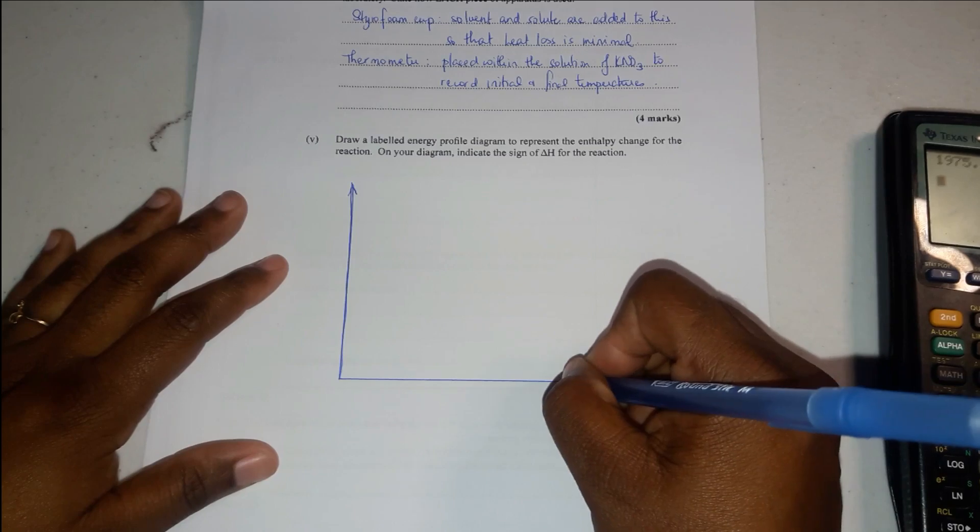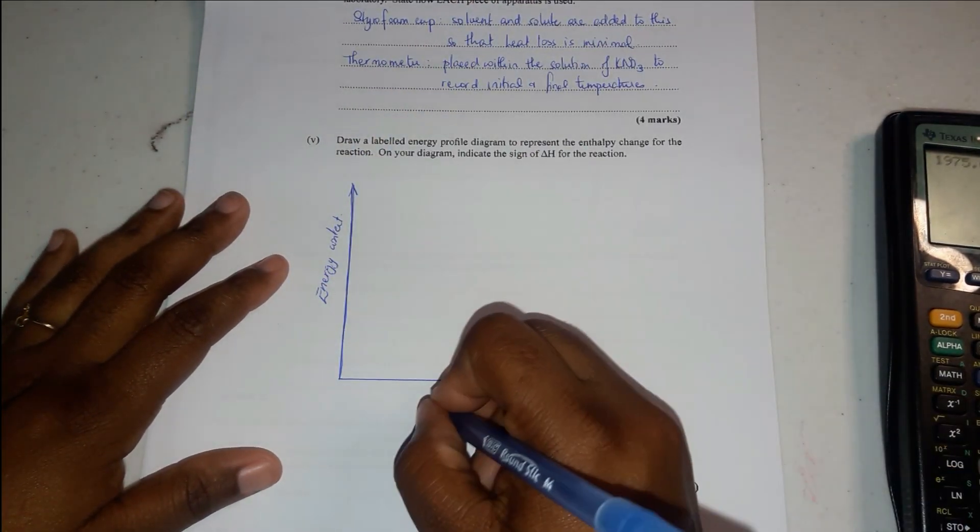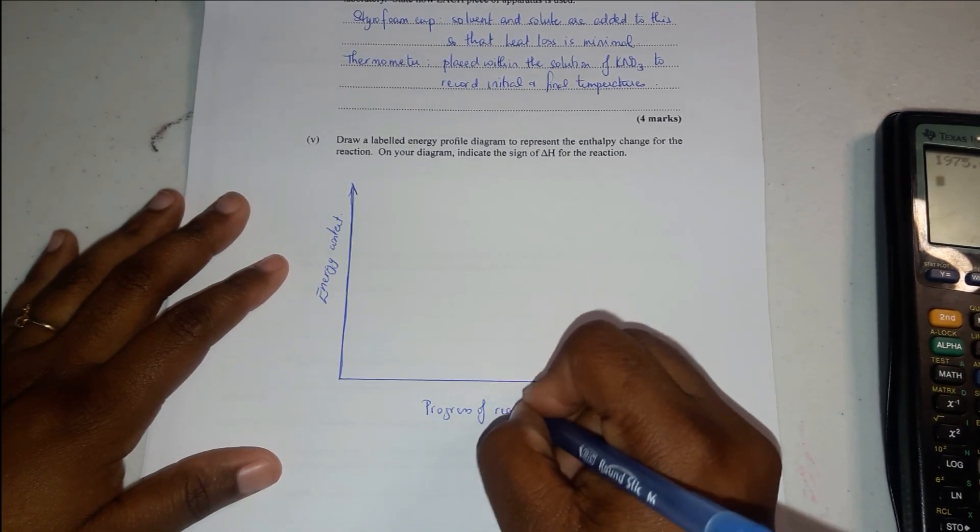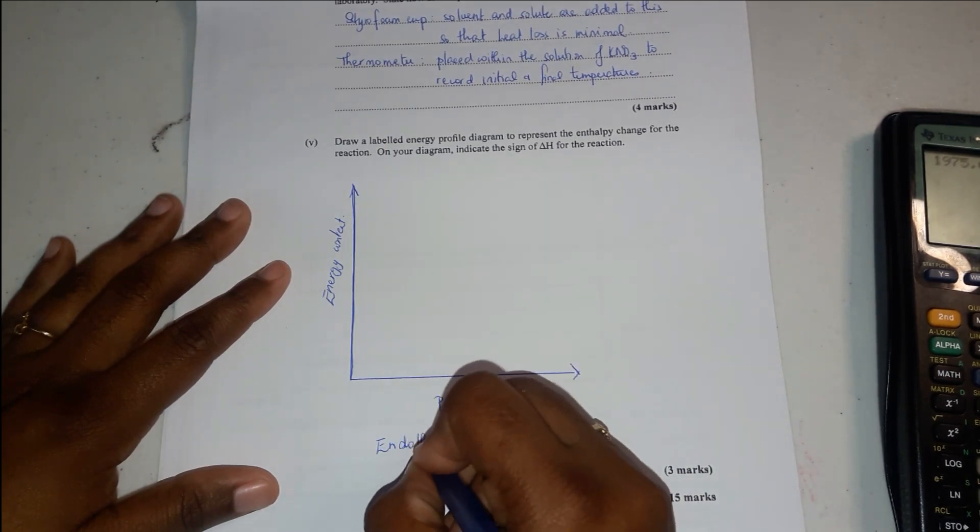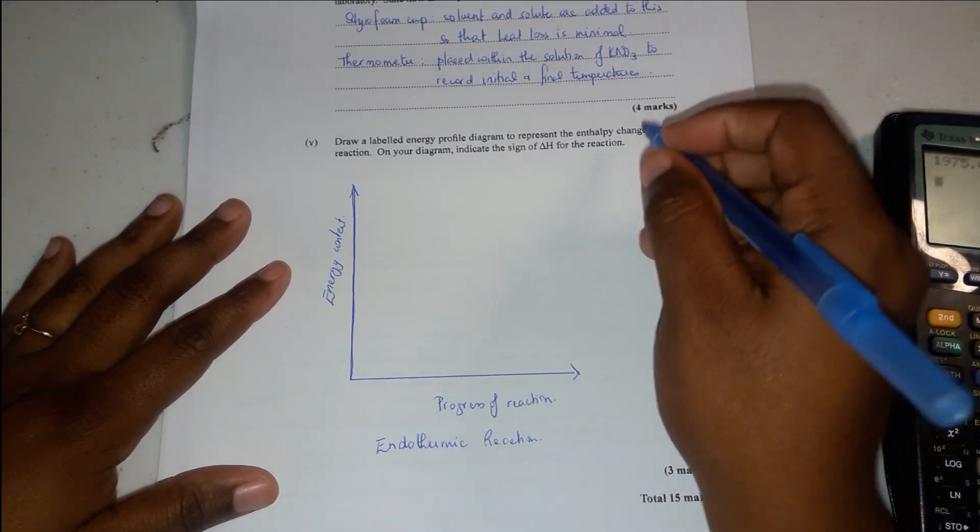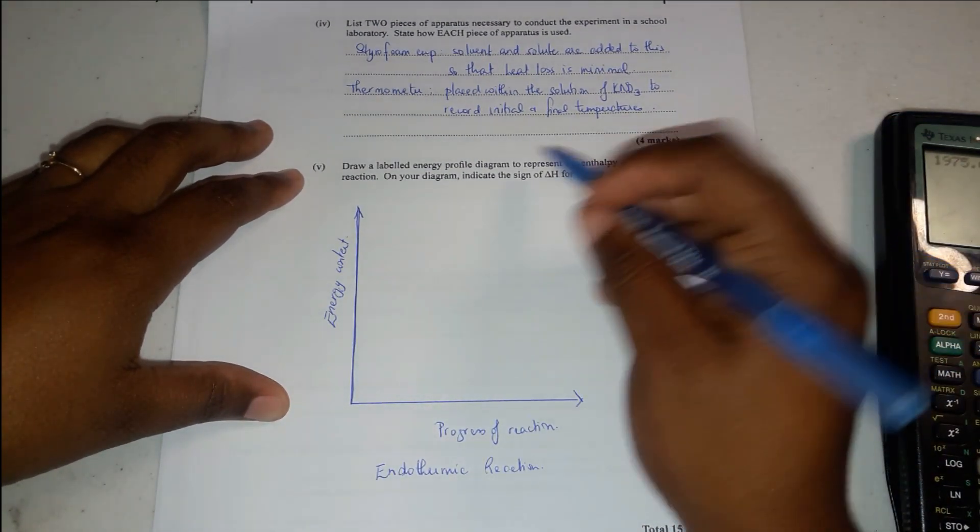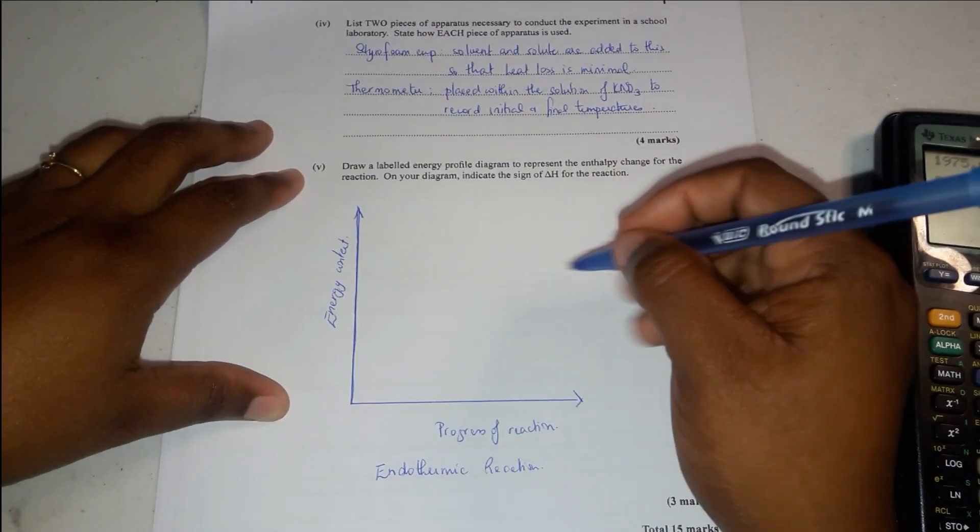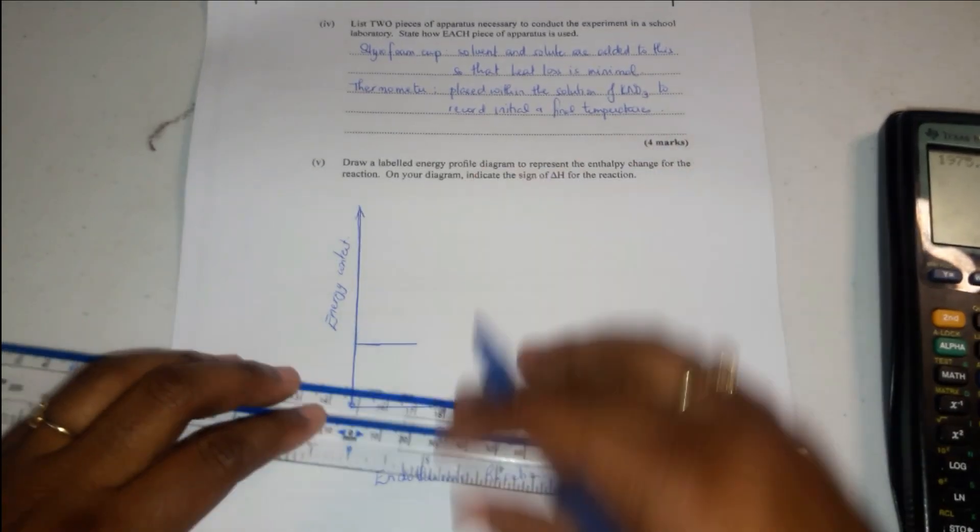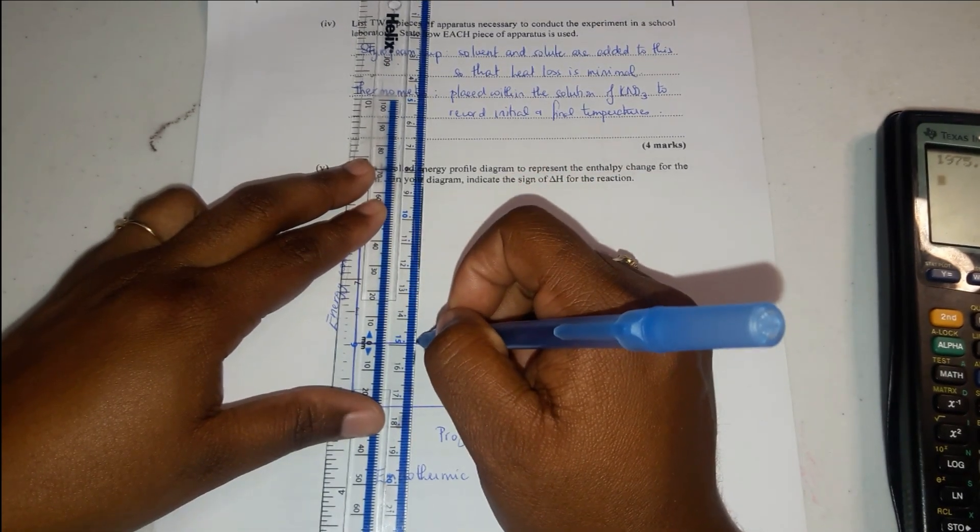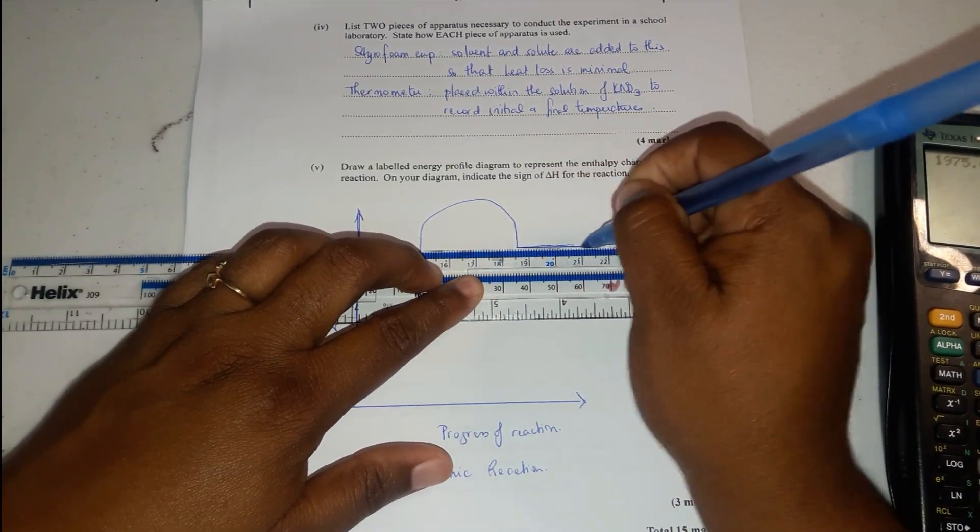Put your arrows. Then you have your energy content and your progress of reaction. You put a little title here of endothermic. It's endothermic because there was a drop in heat, meaning that the outside of the flask must have gotten cold. Therefore, it's endothermic. It absorbs heat from the surroundings.